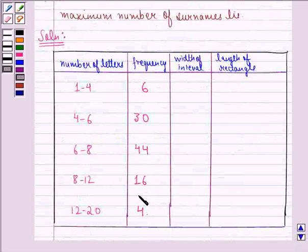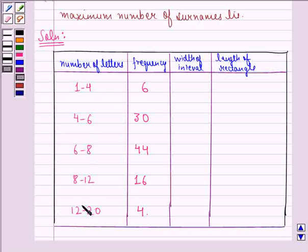Now we find the width of each interval. Here the width of each interval will be 4 minus 1 that is 3, 6 minus 4 is 2, 8 minus 6 is 2, 12 minus 8 is 4 and 20 minus 12 is 8.